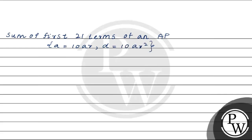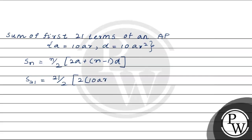We will use this data to find the sum of the first 21 terms of the AP using the formula for sum of n terms. We have S21 equal to 21 by 2 times of 2 times the first term, which is 10AR, plus n minus 1 times D, which is 100AR squared.